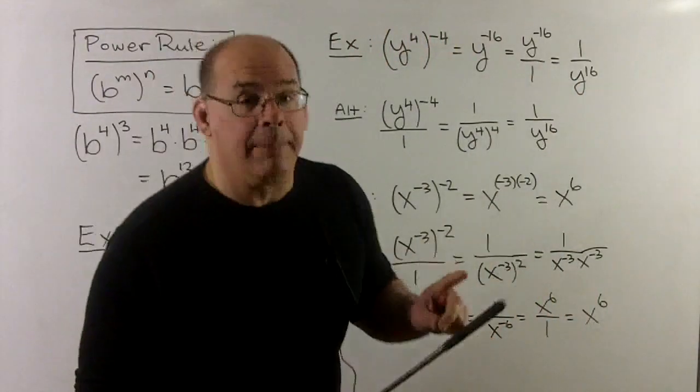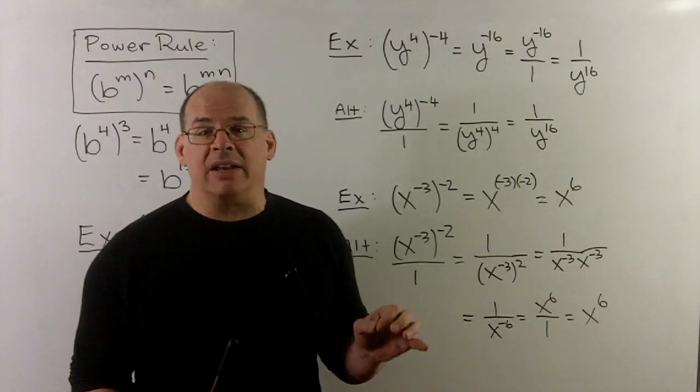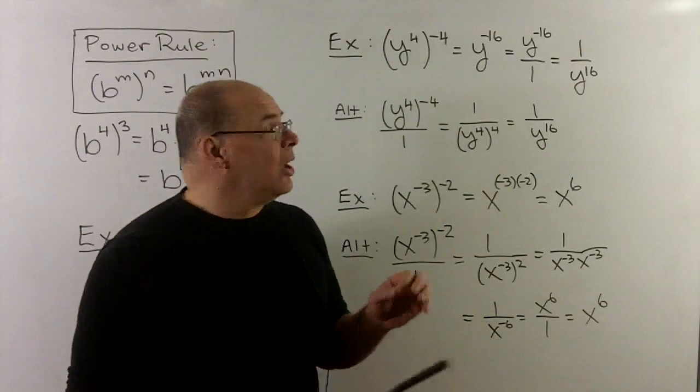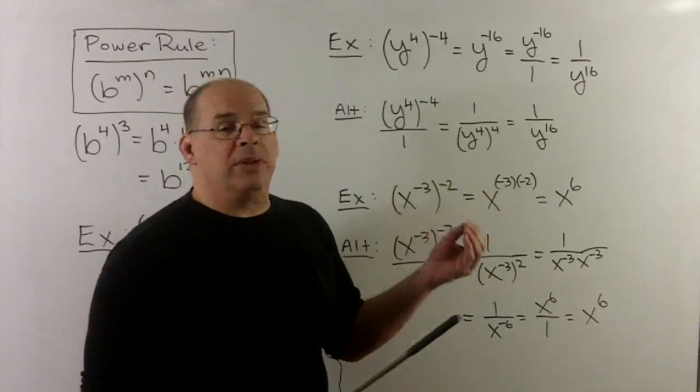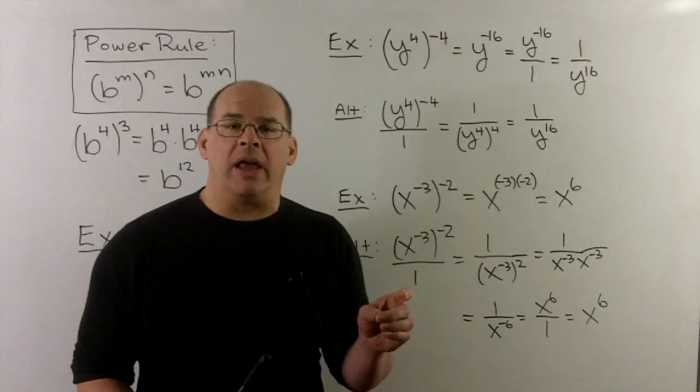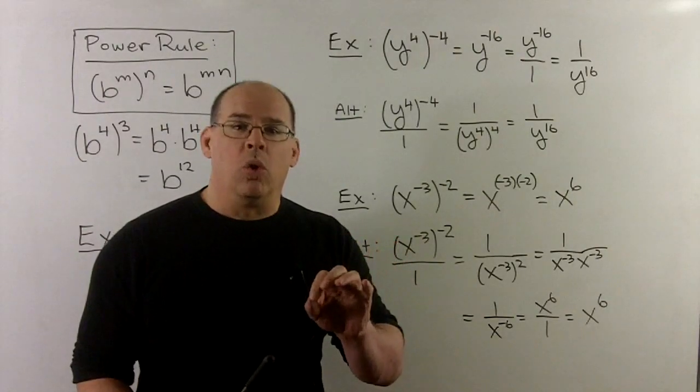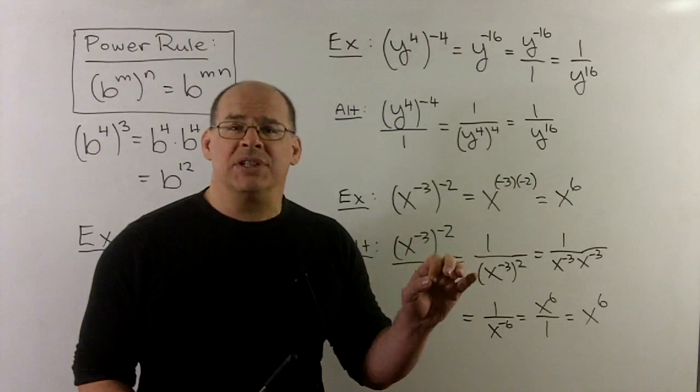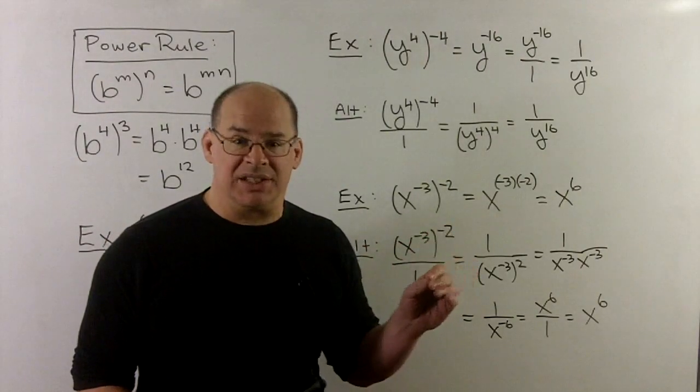Now let's look at some examples with negative exponents. We'll actually do these twice just to show that the rule with negatives is consistent.